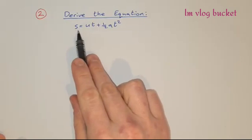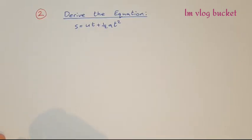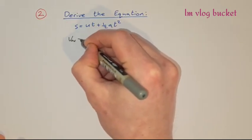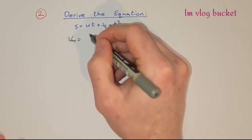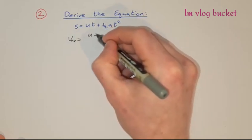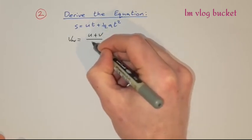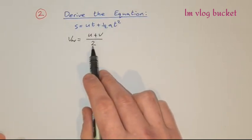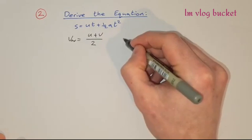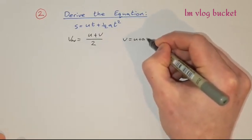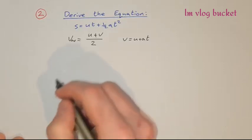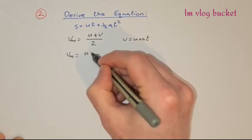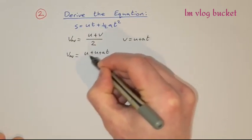We're now asked to derive the equation s = ut + ½at². To start with this one, we say that the average velocity — v_average — is equal to the initial velocity u plus the final velocity v, all over 2. So v_average = (u + v)/2. But we know that v = u + at from equation 1, so we substitute that in: v_average = (u + u + at) / 2.